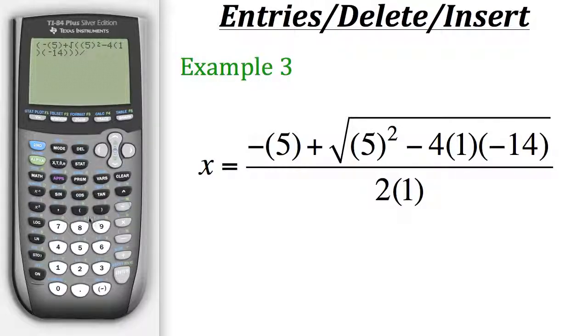And then divide it by 2 times 1 and then hit enter. Now from this we could see that x will equal 2. Now typically at this point we would do the exact same thing over again, but rather than doing negative 5 plus the rest of this expression, we would do negative 5 minus.